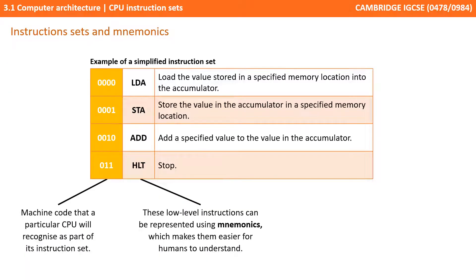What's important to remember is every machine has its own specific instruction set. Here's an example of a simplified instruction set for a given processor. On the left is the actual binary machine code that a particular CPU will recognise as part of its instruction set. These low level instructions can be represented by what we call mnemonics, and they make these easier for humans to understand. These low level mnemonics form the basis for a low level programming language known as assembly code, which we're going to be looking at in later videos in this course.